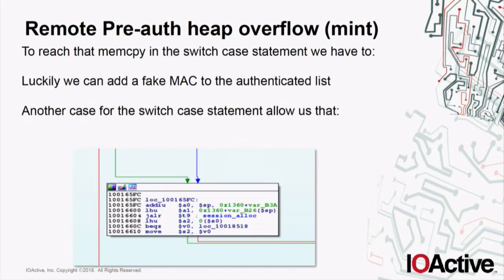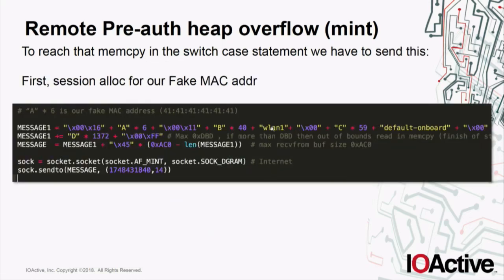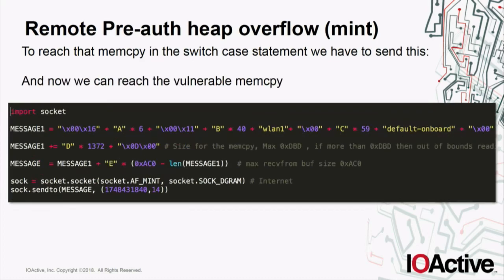If the MAC address is not in the authenticated list, you won't reach that particular memcpy. Luckily, there's another case in the switch-case statement where we can call a session_analog function to add our fake MAC address to that list. So first we execute Python code to add the fake MAC address — 0x4141414141 — to that list. Then, since our fake MAC address is already in the list, we can reach the heap overflow memcpy. In the buffer we provide the fake MAC address, and the rest is protocol data to reach the memcpy.